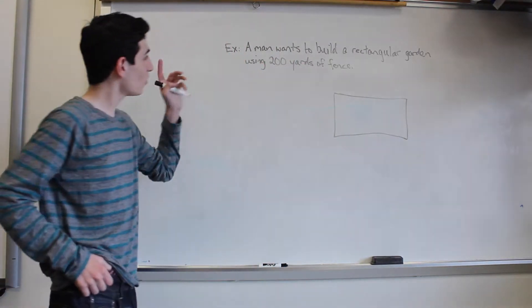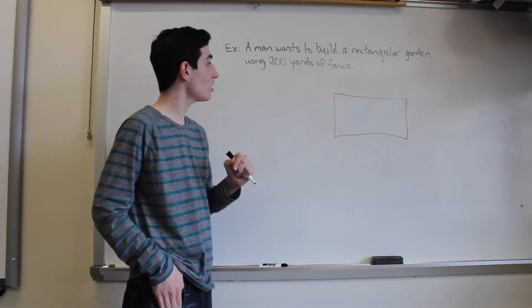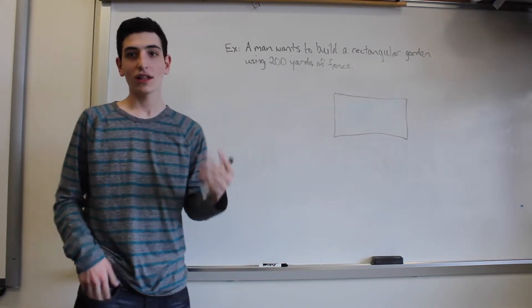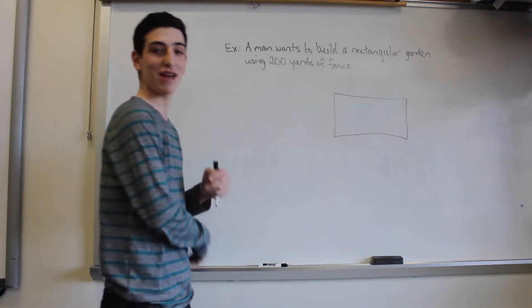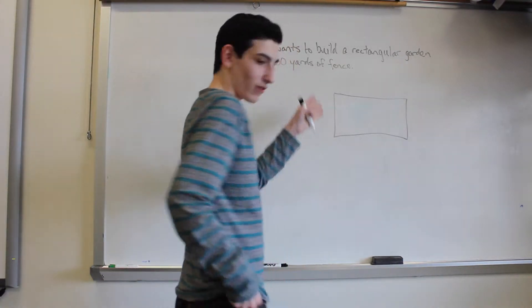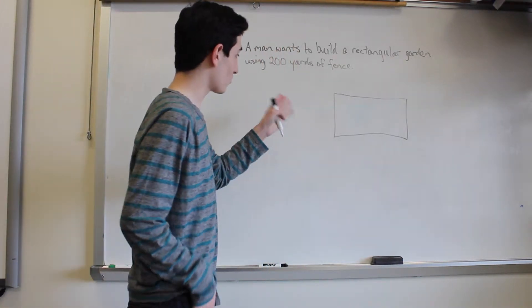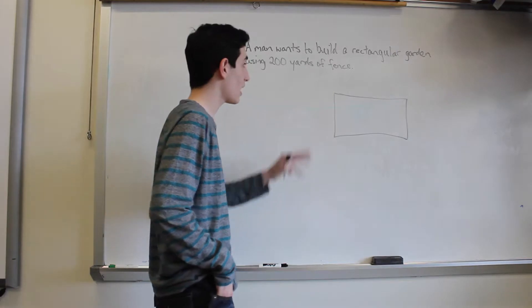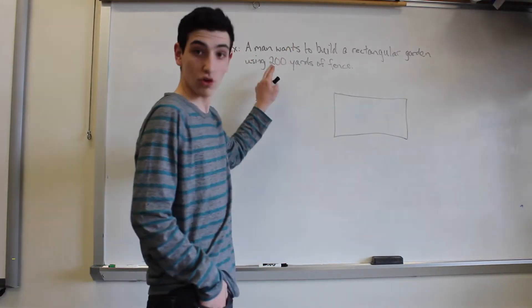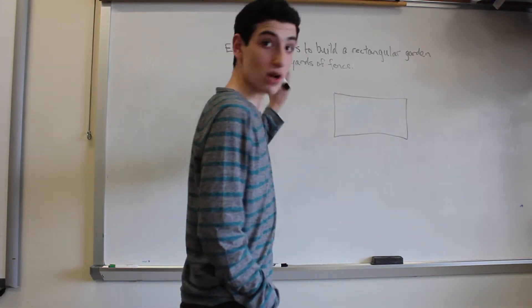If we take our example of a man who wants to build a rectangular garden using 200 yards of fence, let's try and find the maximum area. I've already gone and drawn the rectangular garden that he's going to use, and the question already gives us 200 yards of fence, so we know that that's our perimeter.